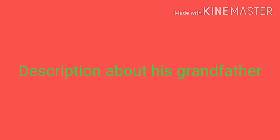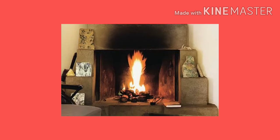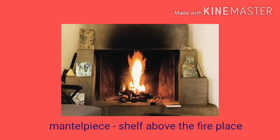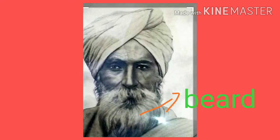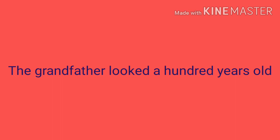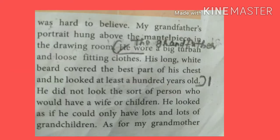Now he describes his grandfather. There is a picture of his grandfather above the mantelpiece in the living room or drawing room. A mantelpiece is a shelf over the fireplace. The grandfather wore a big turban and loose-fitting clothes. He had a long white beard that covered the best part of his chest. He looked at least 100 years old and as if he could only have lots and lots of grandchildren.